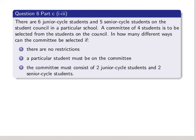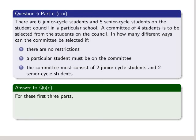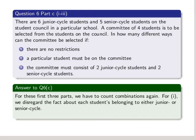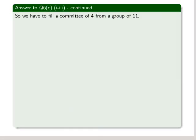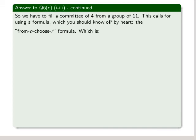Part C: There are six junior cycle students and five senior cycle students on the student council in a particular school. A committee of four students is to be selected from the students on the council. In how many different ways can this committee be selected if there are no restrictions? (2) A particular student must be on the committee. (3) The committee must consist of two junior cycle students and two senior cycle students. For these first three parts, we have to count combinations again. For one, we disregard the fact about each student belonging to either junior or senior cycle. It doesn't matter for this part. So we count all the students, and that's clearly 6 plus 5, and that's 11. So we have to fill a committee of four from a group of 11. This calls for using a formula which you should know by heart. It's called the from n choose r formula.